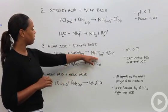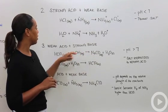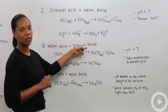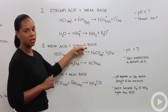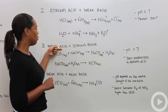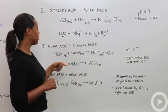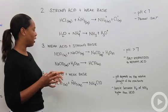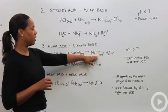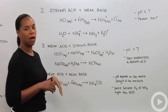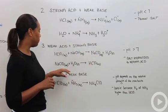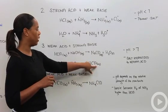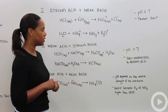Here, the strong base completely dissociates into its ionic species, but with the weak acid some of the acidic species remains. That means your sodium hypochlorite can react with water to reform your weak acid, hypochlorous acid.